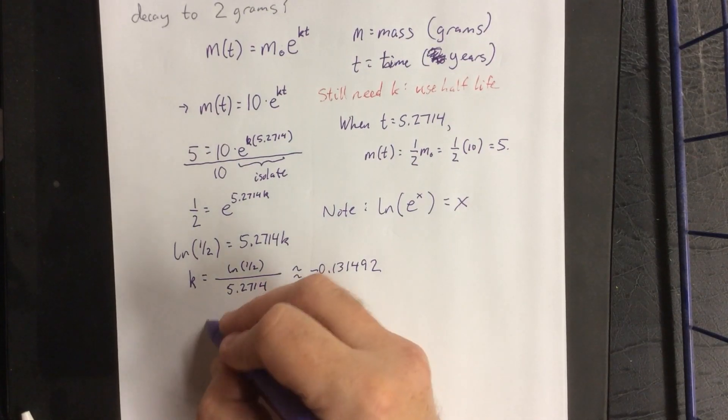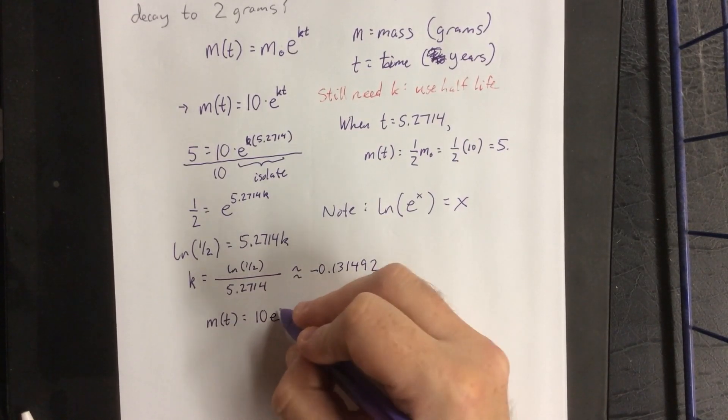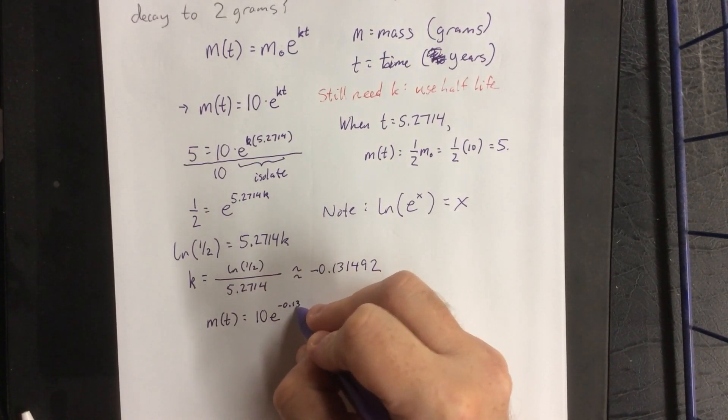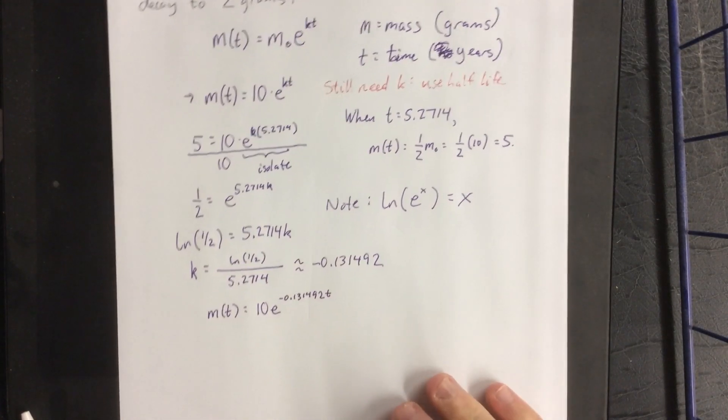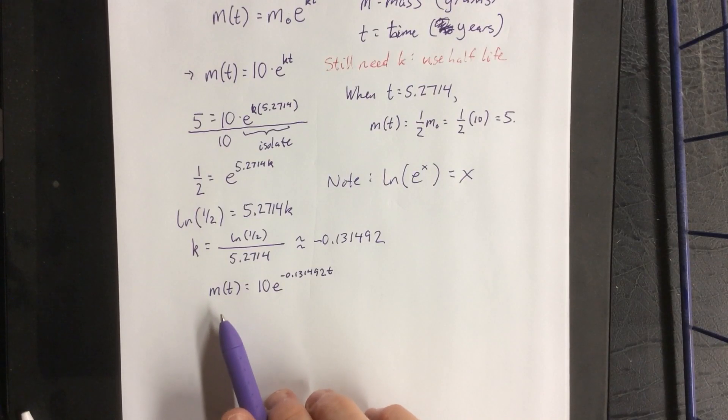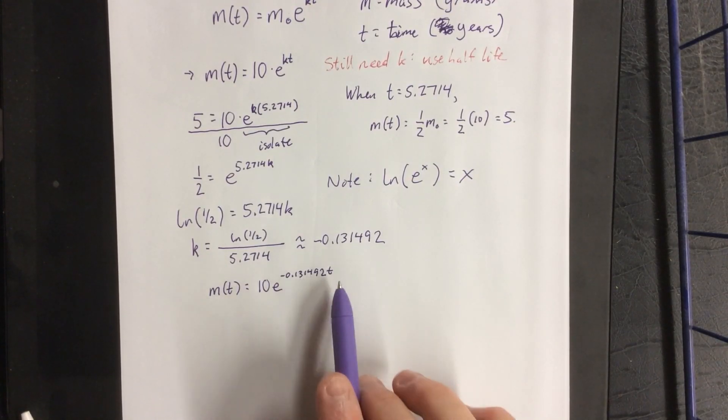So with those things in mind, we can now set up our completed radioactive decay model. And it'll look approximately like this. So the amount of mass I'm going to have after time t is going to be 10 times e raised to the number that we got for k times t.